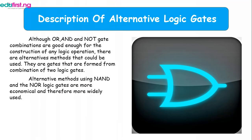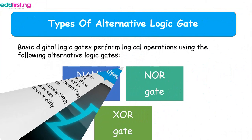We've spoken about OR, AND, and NOT in simple logic gates and said that they are good enough for construction of any logic operation. But there are also alternatives that could be used. These alternative logic gates are just the alternatives of the single logic gate — they are gates formed from a combination of two simple logic gates. Using NAND and NOR logic gates are more economical and therefore more widely used.